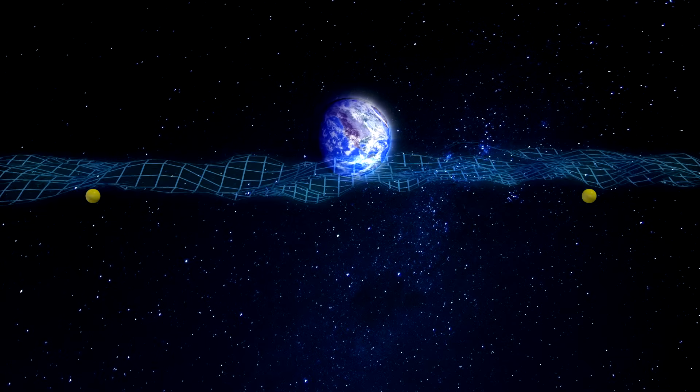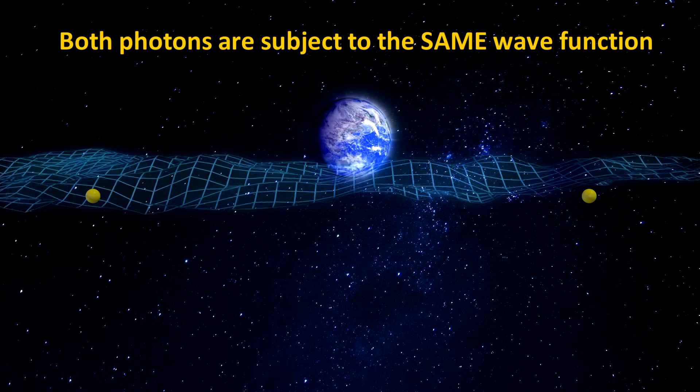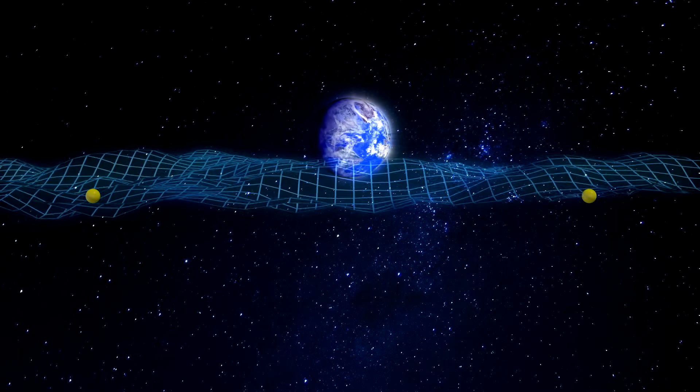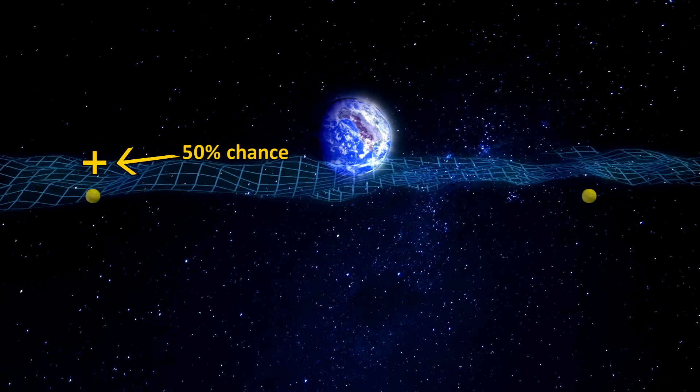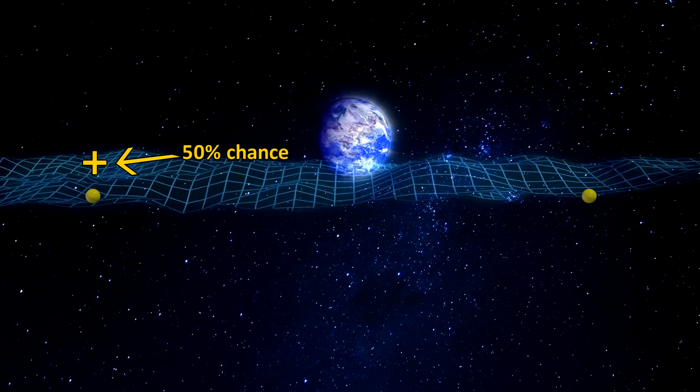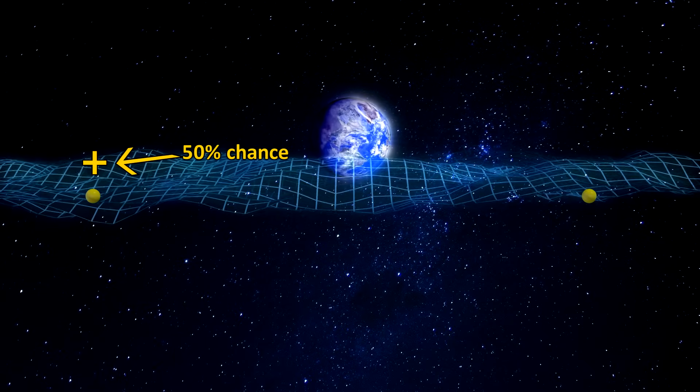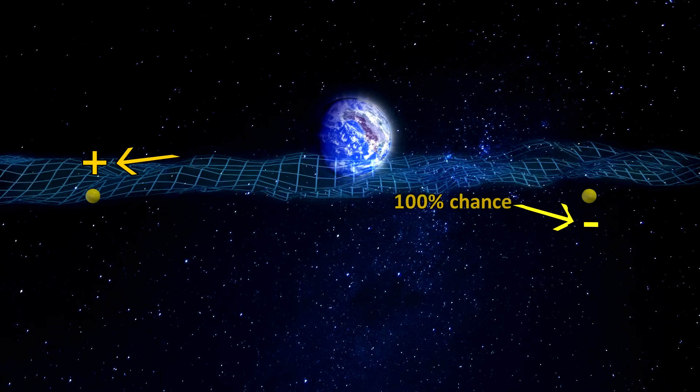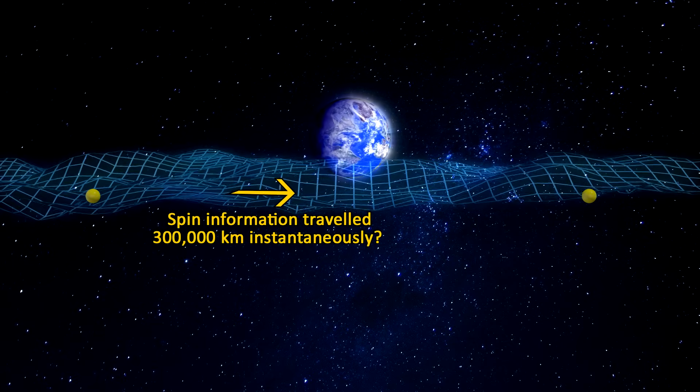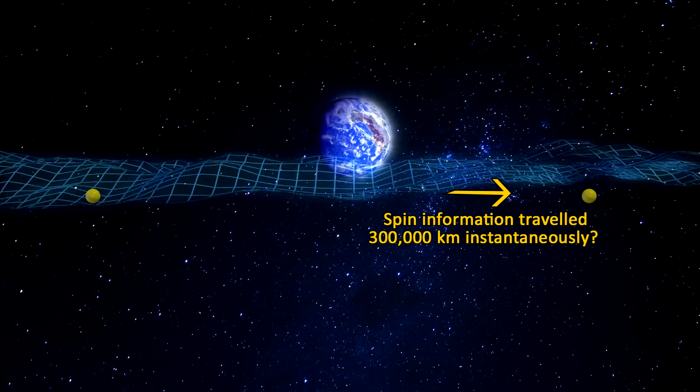However, the wave function of these photons is not independent. They are really the same wave function governing both photons. Now if we measure the spin of one of them, we have a 50% chance of detecting a spin up. Let's say we do detect spin up. Now let's measure the spin of the other photon in less than one second. It should also have a 50% chance of having spin up or spin down, but it doesn't. It has a 100% chance of having a spin down. This means that the information of the collapse of the wave function of one of the photons had to travel faster than light to affect the other photon.